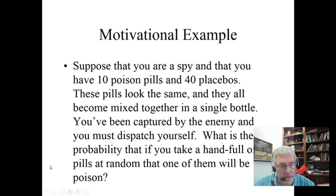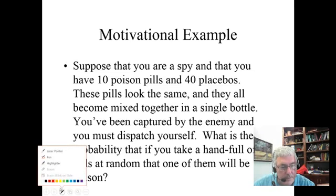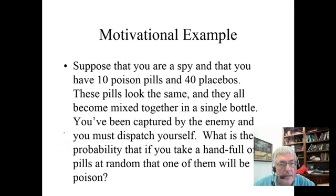I'm going to start out with a motivational example. Suppose that you're a spy and that you have 10 poison pills and 40 placebos. These pills all look the same and they all come mixed together in a single bottle. You've been captured by the enemy and you must dispatch yourself. What is the probability if you take a handful of five of these pills at random that one of them will be poisoned?